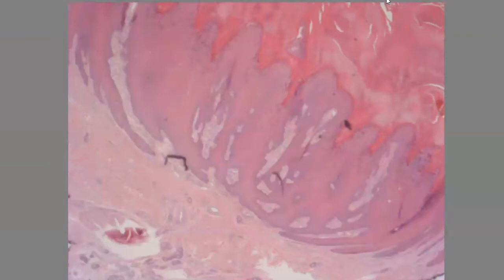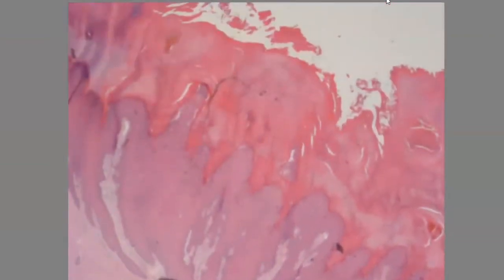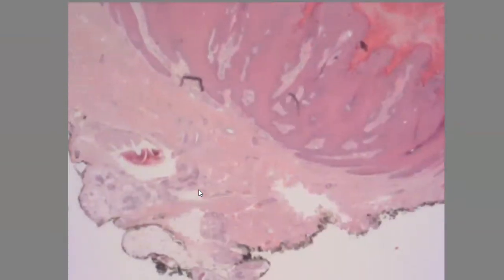So now we are at 2.5x. Let's first get some orientation about this slide. This is the top or surface of the skin, and this is the epidermis. This area is the epidermis with this hyperkeratosis on top, and then we will go deep, and this is the dermis.